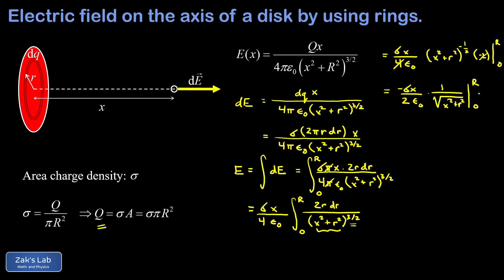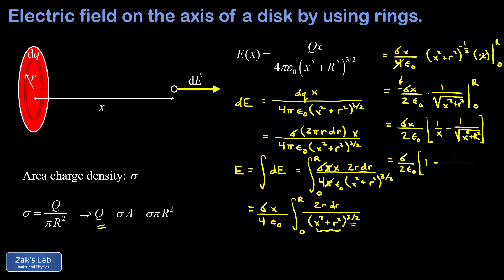Evaluating the limits, we replace little r with R, then subtract the term with little r equal to zero. Distributing the minus sign reverses the direction of the difference, so we write sigma·x over 2ε₀, with the lower limit first: 1 over √(x²) which is just 1/x, minus 1 over √(x² + R²). Distributing x through the brackets, we arrive at sigma over 2ε₀ times the quantity (1 − x / √(x² + R²)).